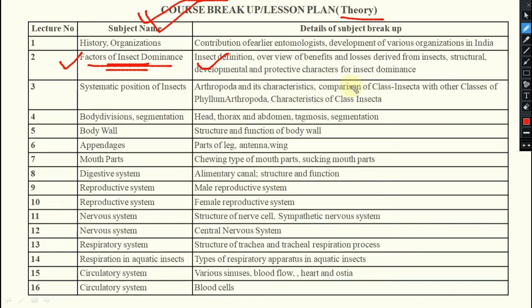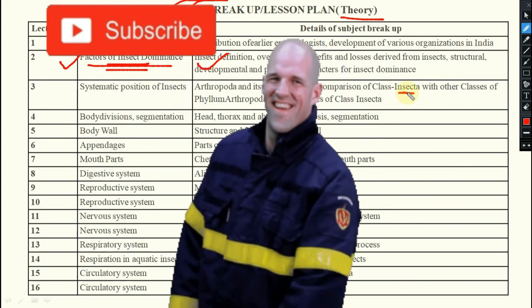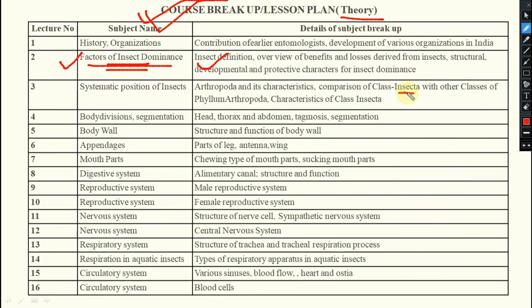We will discuss the different classes within Arthropoda, where insects form the class studied in entomology, and the differences between insects and other classes. Then we cover external morphology: body division, segmentation, head, thorax, abdomen, tagmata, and muscle segmentation. Body wall structure and function, the integument, appendages such as legs, antennae, and wings, and mouthparts — including chewing type, sucking type, and different modifications.